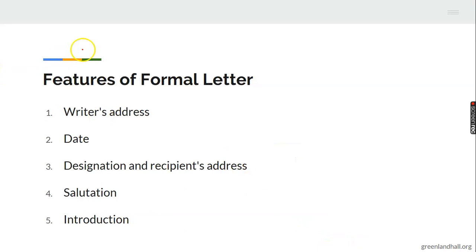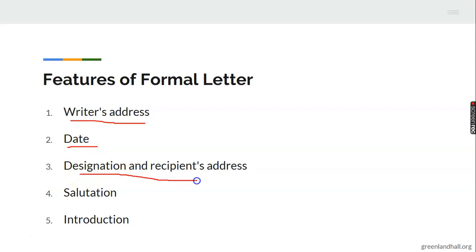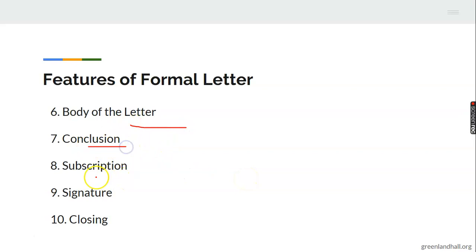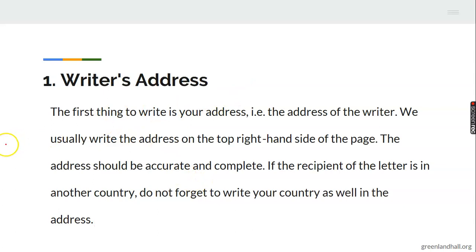Let's look at the features of a formal letter. These are the important things that must be in your formal letter — without them your formal letter is incomplete. The ten features are: one, the writer's address; two, the date; three, the designation and recipient address; four, the salutation; five, the introduction; six, the body of the letter; seven, the conclusion; eight, subscription; nine, signature; and ten, the closing.